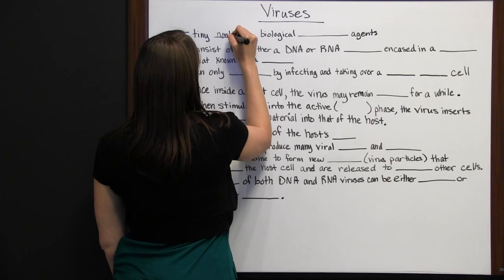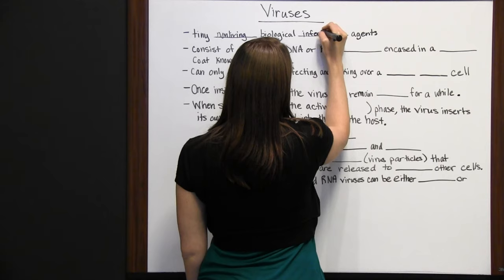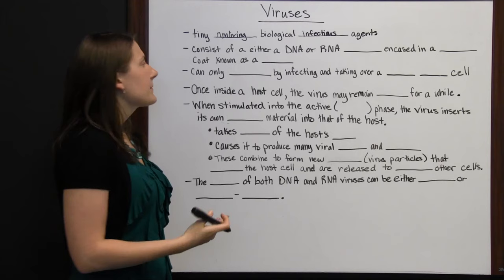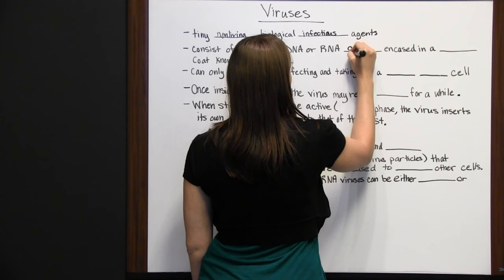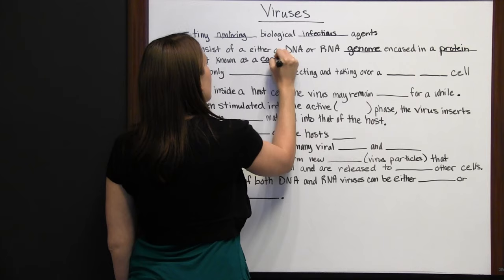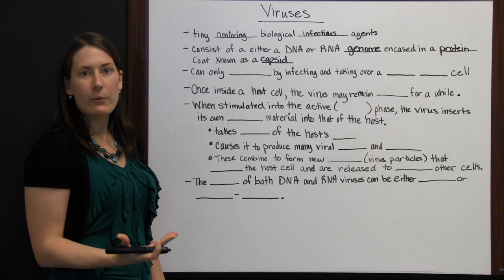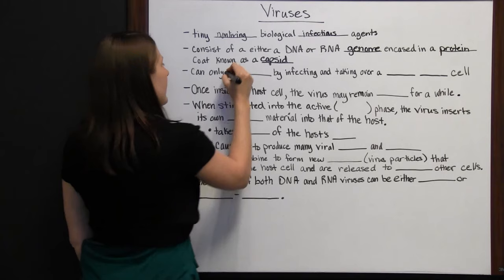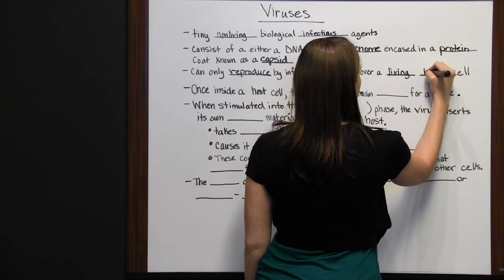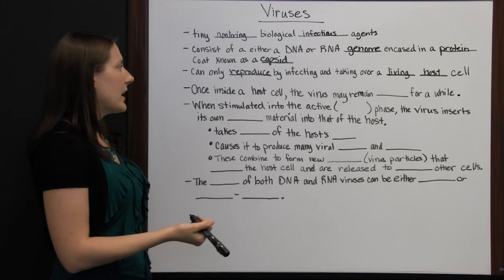Viruses are tiny, non-living, biological, infectious agents. While not technically alive, they are biological agents that infect healthy cells. They consist of either a DNA or RNA genome encased in a protein coat known as a capsid, which protects the viral genome until it can infect a host cell. Viruses can only reproduce by infecting and taking over a living host cell.